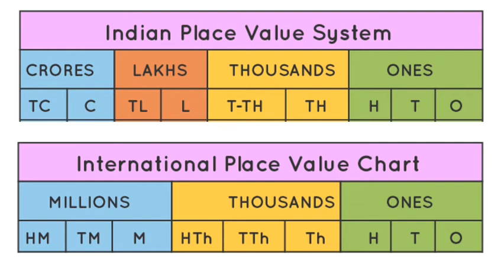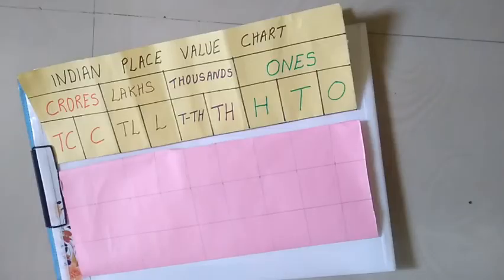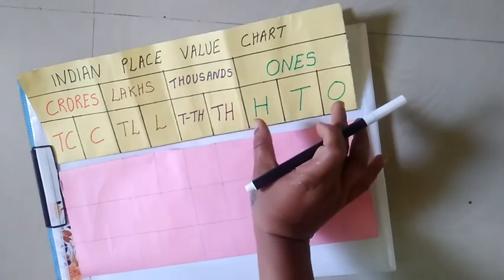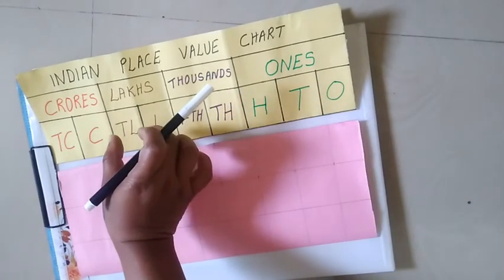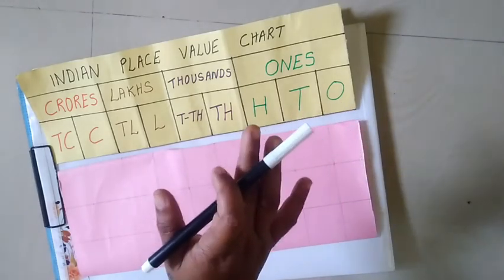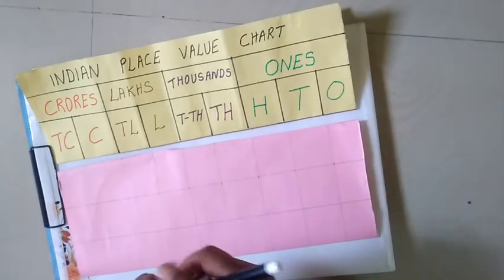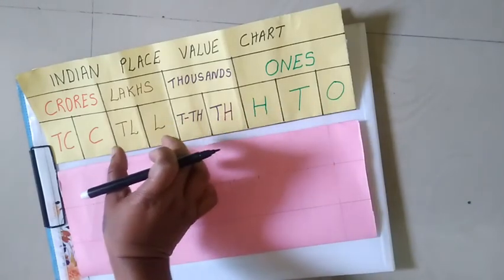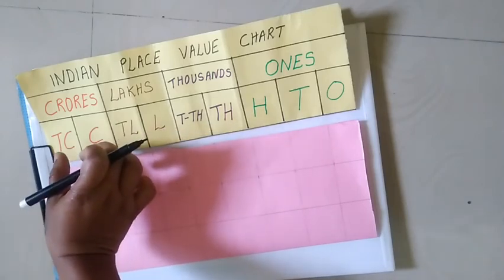Next we shall learn where to insert commas and how to read numbers. The best way to introduce commas is by counting from the units or ones place. We start from the right and use commas to set off groups of three digits, then two digits, two digits, and two digits — these groups are called periods: the ones period, thousands period, lakhs period, and crores period.